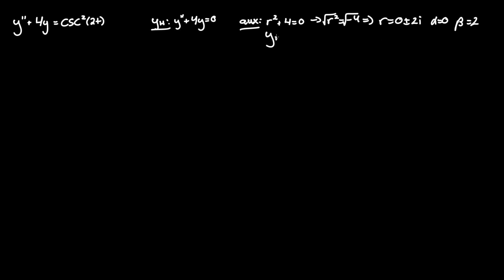This means that our homogeneous solution equals e to the alpha t times c1 cosine of beta t plus c2 sine of beta t. And since alpha is 0, e to the 0 is 1, so we're just left with the parentheses term. That means yh equals c1 cosine of 2t plus c2 sine of 2t.